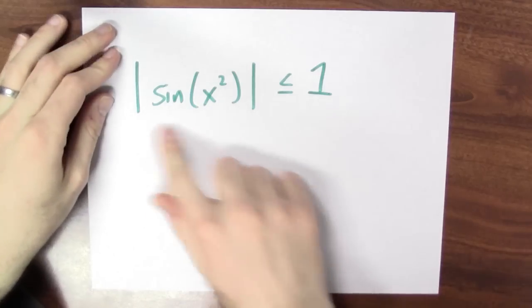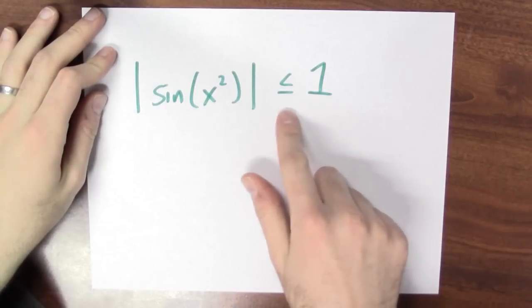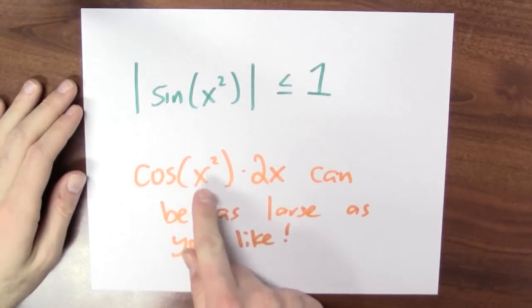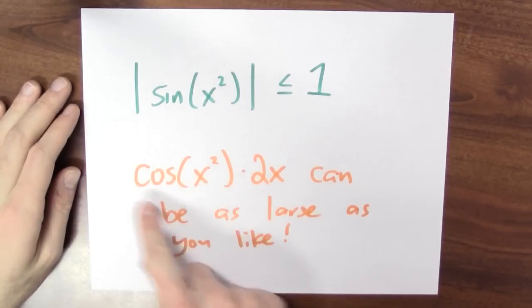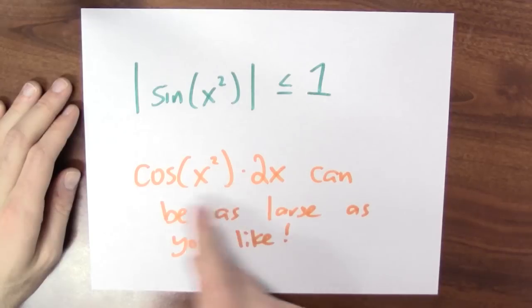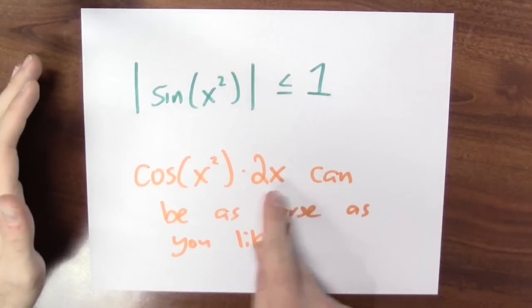This is a pretty neat example. In magnitude, the function sine of x squared is no bigger than 1. And yet what do we know about this function's derivative? The derivative of sine of x squared is cosine of x squared times 2x, and that function can be as large as you like. You can make cosine of x squared times 2x as big as you want, as long as you choose x appropriately.